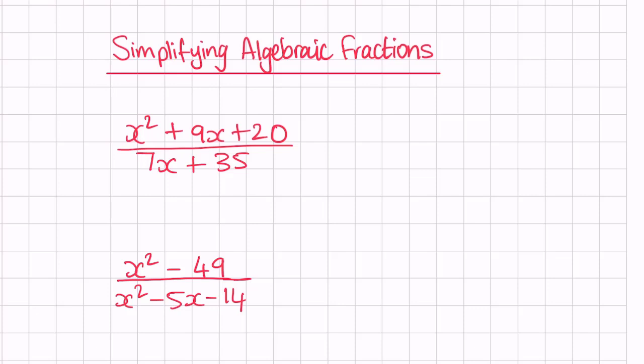Let's go ahead and have a look at these two examples. On the first one we have x squared plus 9x plus 20 over 7x plus 35. First of all we are going to factorize it. We can see it's a quadratic expression in the form of ax squared plus bx plus c, so we can factorize using product and sum.